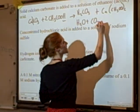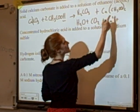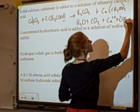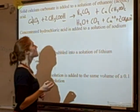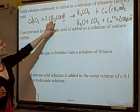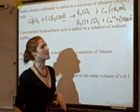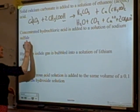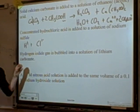The full reaction has solid calcium carbonate plus two acetic acids producing water, carbon dioxide, one calcium ion, and two acetate ions. Next example: concentrated hydrochloric acid — it exists as H+ and Cl- because it's a strong acid that dissociates. It's added to an aqueous solution of sodium sulfide, with Na+ and S2- ions.